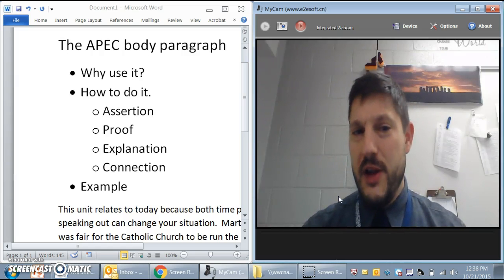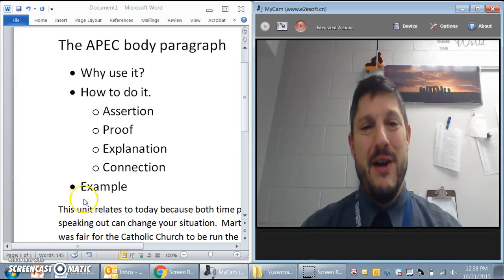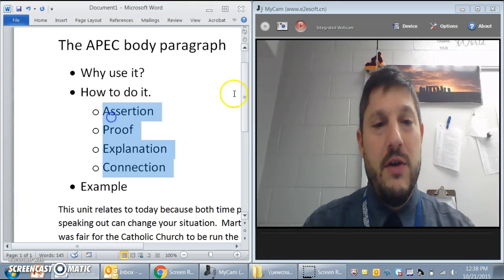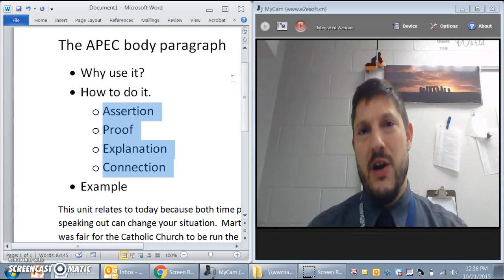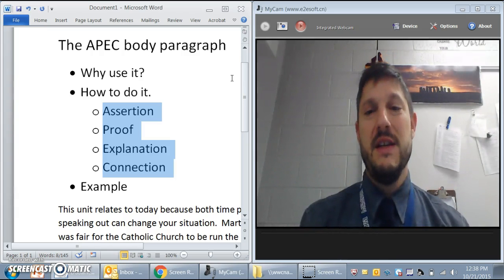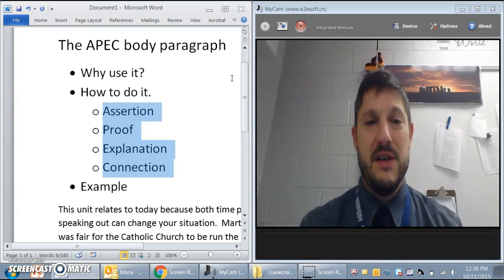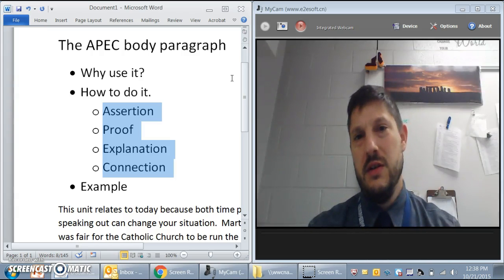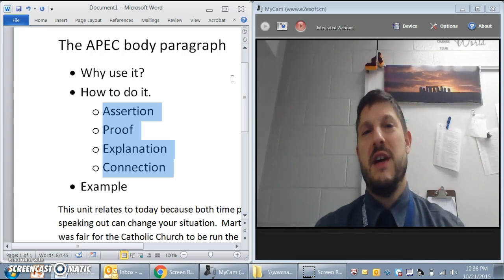So what is the formula? When you're writing a body paragraph you're going to follow this formula right here. You're going to write a paragraph that's four or more sentences, not less than four sentences, and every paragraph needs an assertion, proof, explanation, and connection. Some say the connection is optional but for our purposes let's say have a connection.